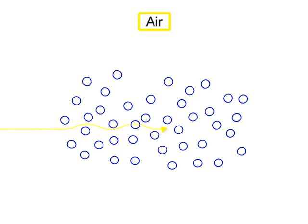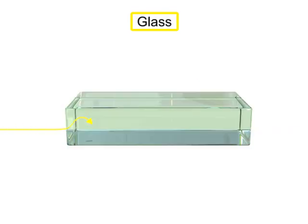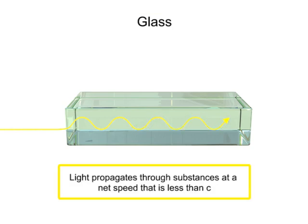When light encounters a medium such as air, water, or glass, it propagates through the substance at a net speed that is less than C.